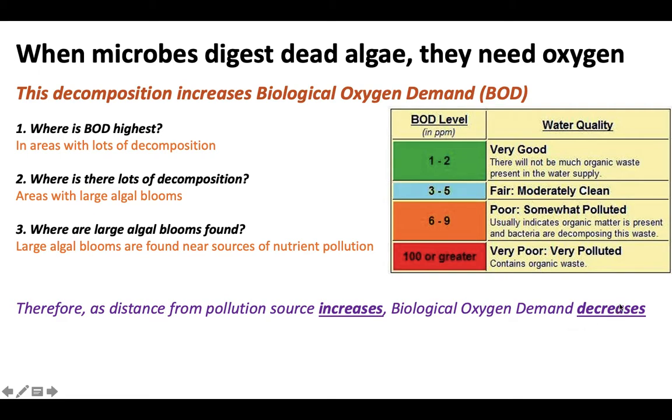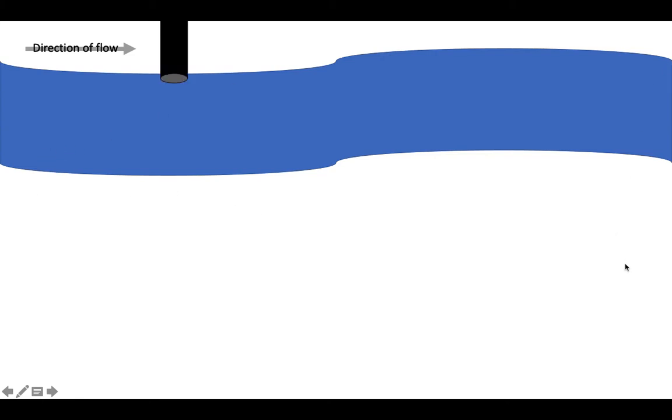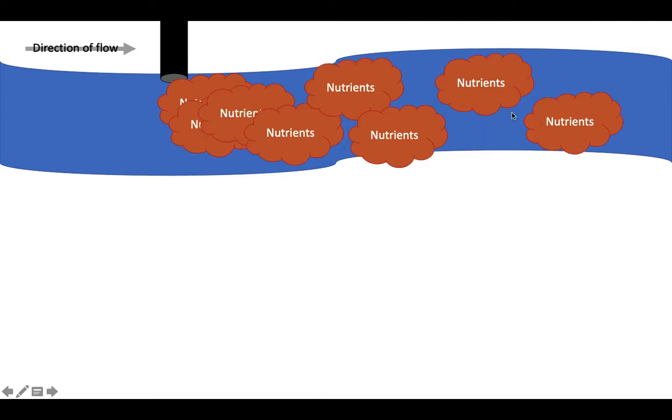This relationship can be graphed into something called the oxygen sag curve — it's a very, very cool graph. Picture a river flowing from west to east. There's a pipe — a point source of pollution — discharging nutrients, maybe sewage or fertilizer runoff, into the water. Because of diffusion, the nutrient concentration is going to be highest right at that source, and as it moves down the river it will diffuse throughout the water and become less concentrated.